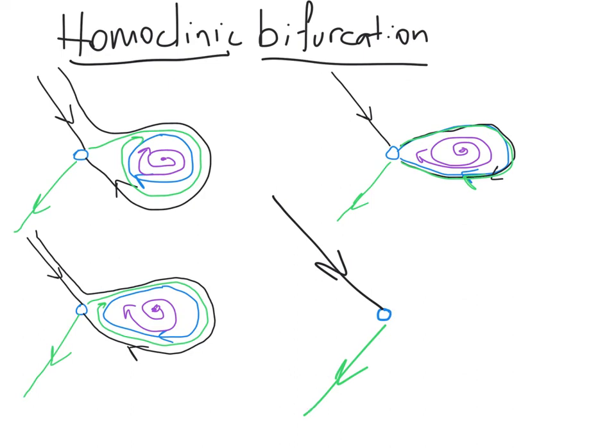And now, our unstable manifold comes out. And instead of going into a spiral, instead it's going to come down like this.